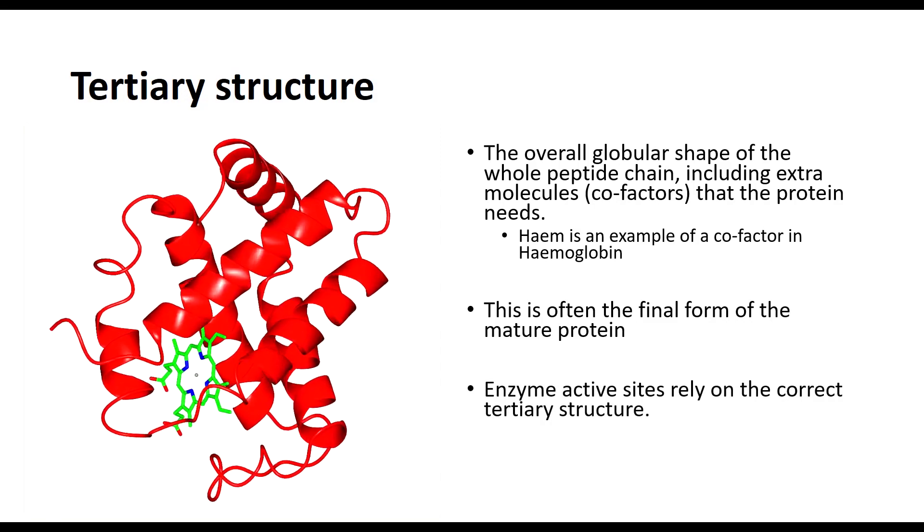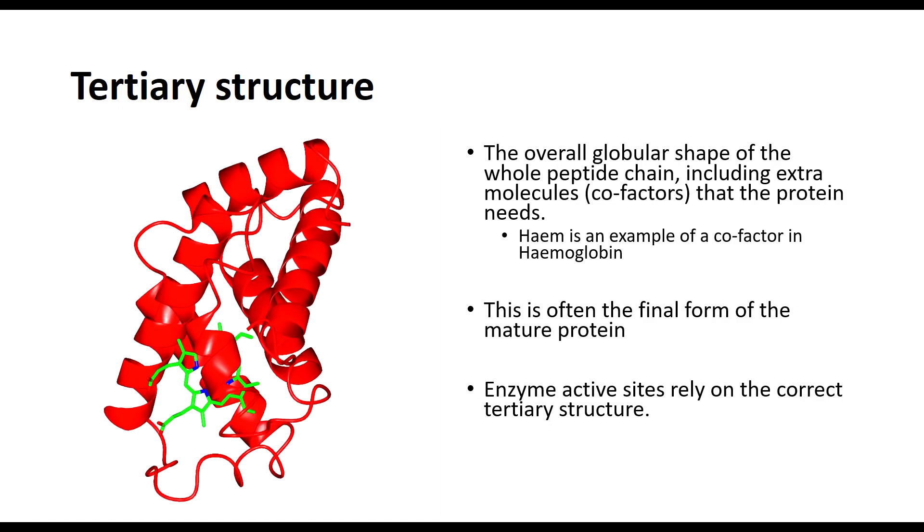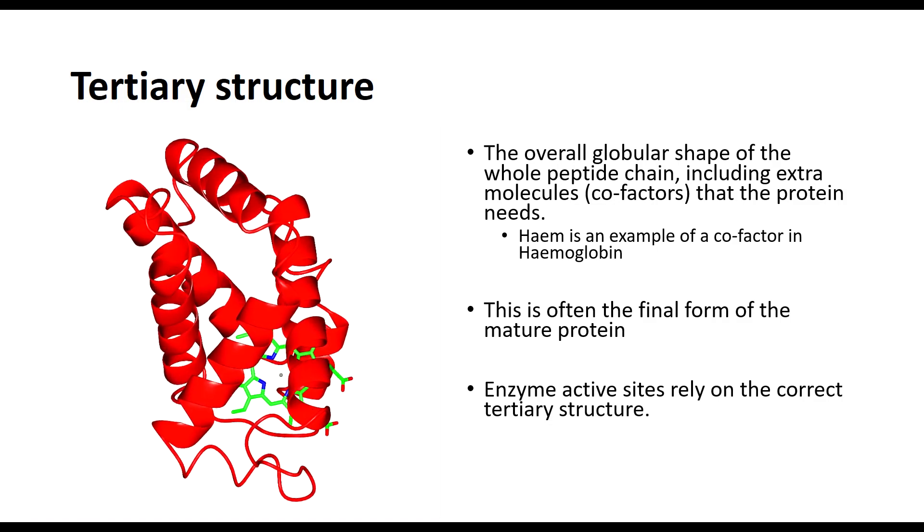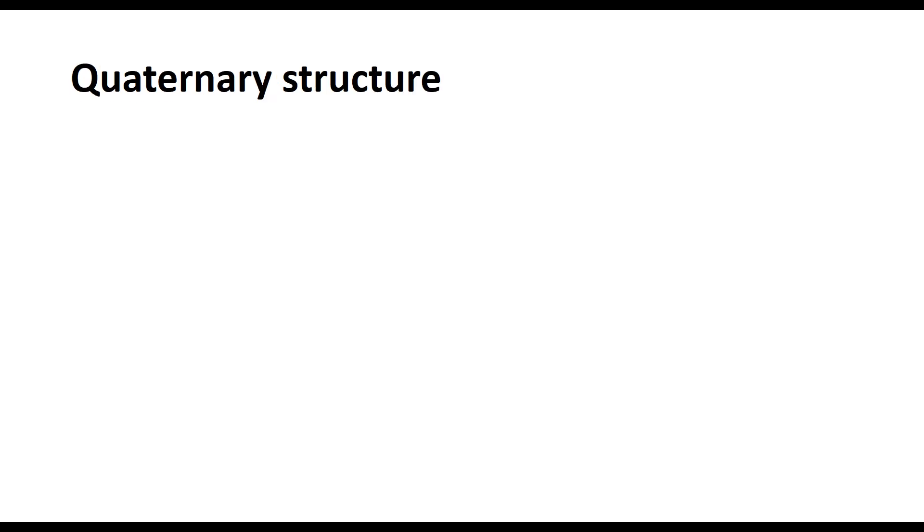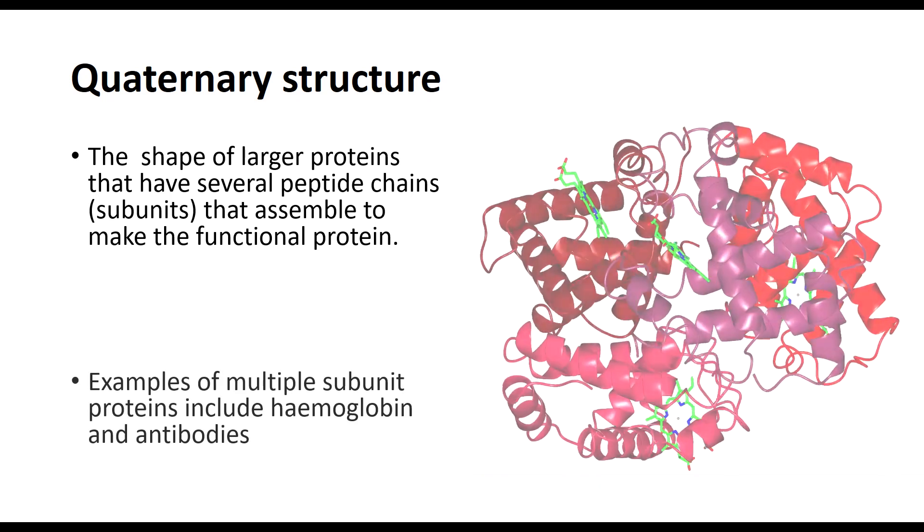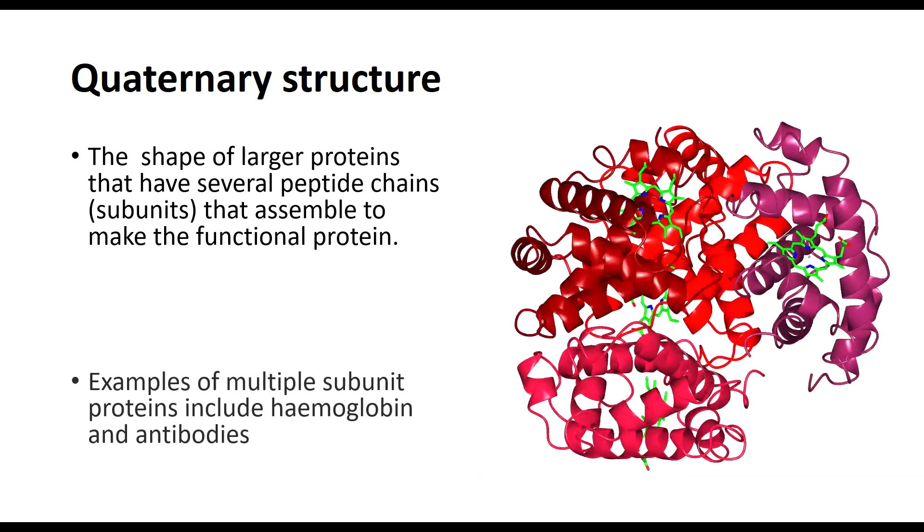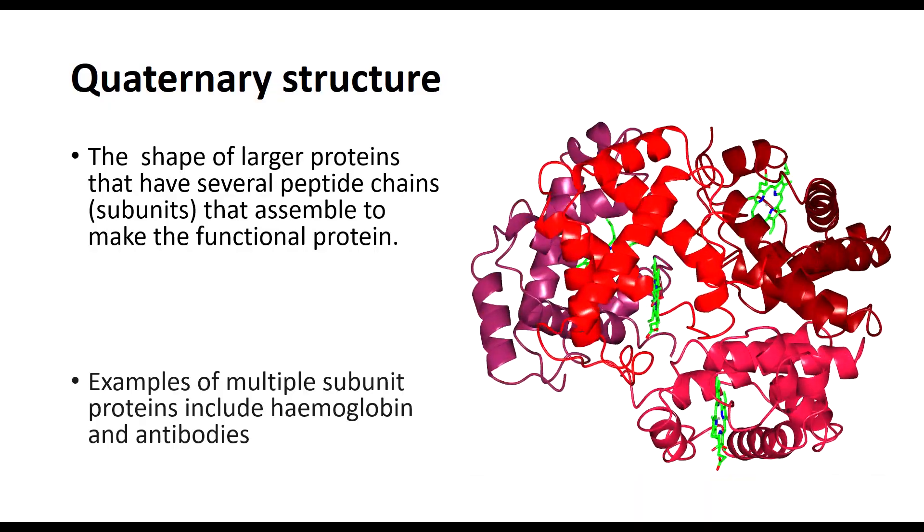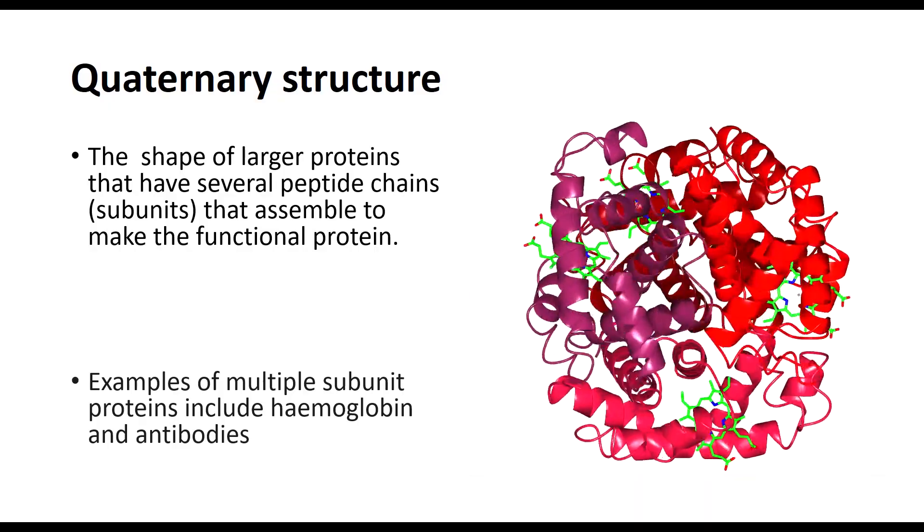Now when talking about the hemoglobin example, you may have noticed that I mentioned a subunit of the protein. That is because hemoglobin is one of the examples of a protein that has a quaternary structure, where multiple tertiary structures associate with each other to form one fully functional protein. Hemoglobin has four individual peptide chains that make up the overall protein, as can be seen here, making it an ideal example as it has all four levels of structure.